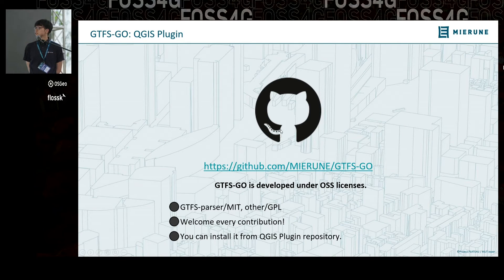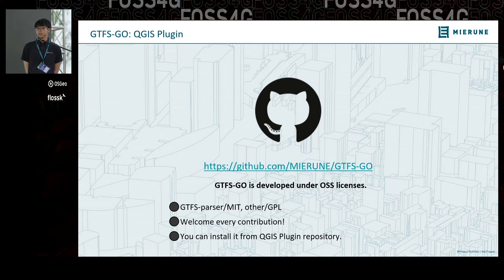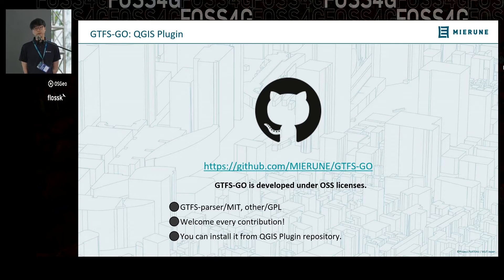GTFS Go is published and developed under open source software licenses. GTFS Go has two licenses: the core module GTFS parser is under MIT license, and the other is GPL. Contributions are welcome. You can install it from the QGIS plugin repository from your QGIS directory.